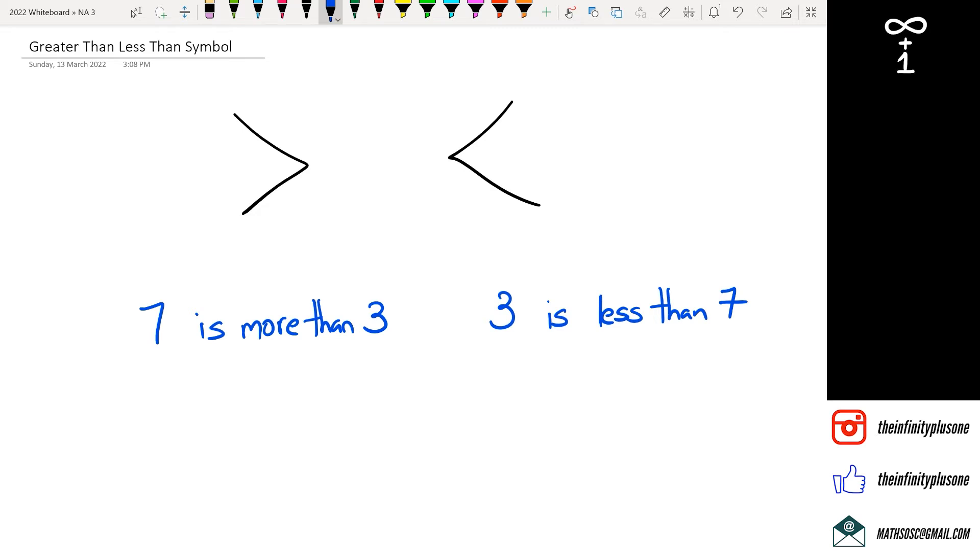And pretty much what that means is when you're writing the symbols, instead of writing 'is more than,' I simply put this symbol there. And as for the other side, I would put it as 3 is less than 7.